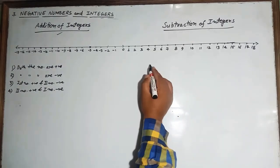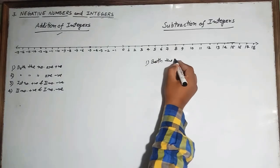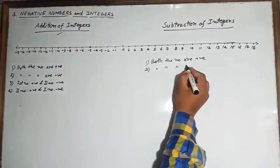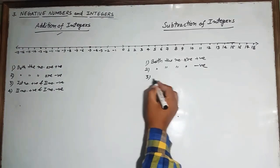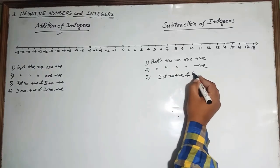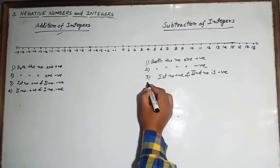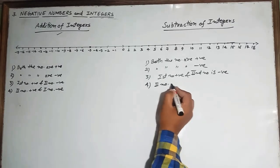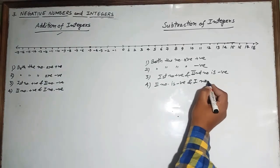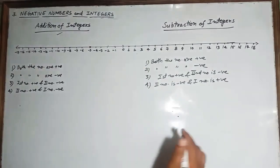Now let's move to subtraction of integers. Just like addition, there are four cases: both numbers positive, both numbers negative, first number positive and second negative, and second number positive with first number negative.